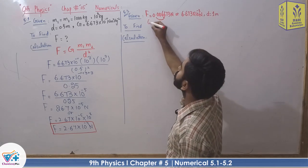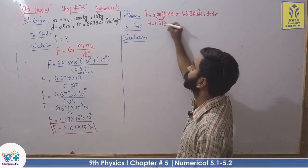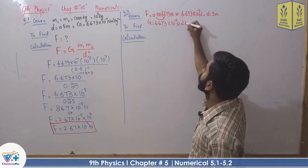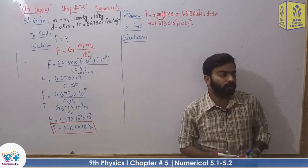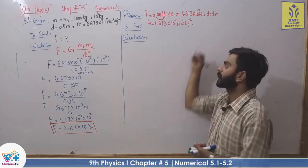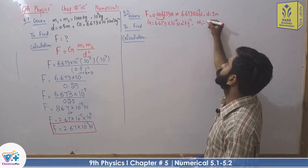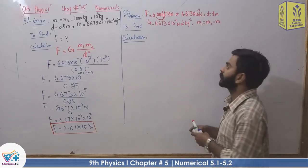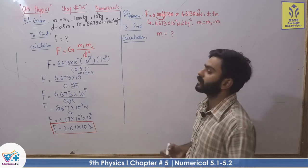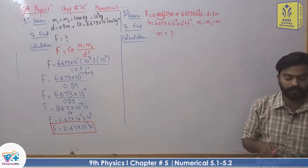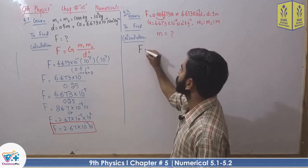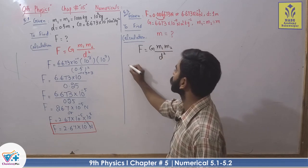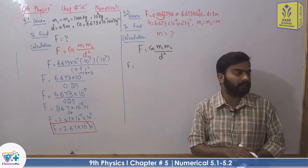Distance is 1 meter. Gravitational constant G = 6.673 multiplied by 10 raised to the power minus 11 Newton meter squared per kg squared. Since the spheres are identical, mass M1 equals mass M2, and both are equal to mass M. We need to find the value of mass M. Force formula: F = G·M1·M2 / D squared.